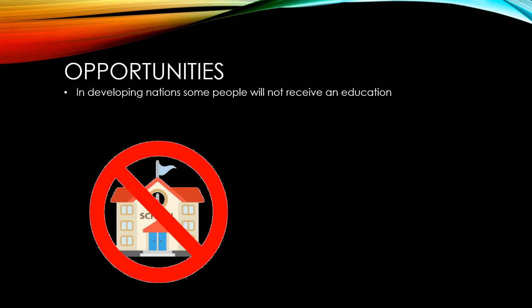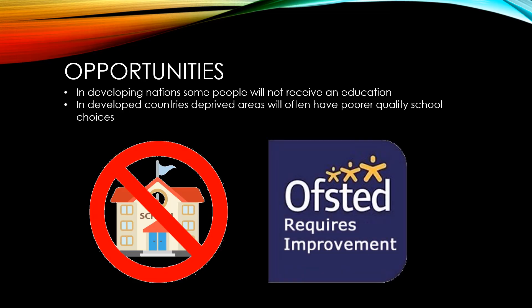In developing nations, many people will not have access to a public education at all. This means that those who can afford to pay for their children's education will have a much better advantage over those who can't, meaning that the gap between rich and poor is likely to only grow larger. In developed countries like the UK, the deprived areas where people with lower incomes are forced to live will often have poorer-quality school choices, making it harder for people from poorer backgrounds to improve their situation in the future.